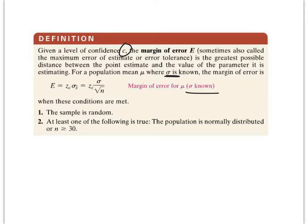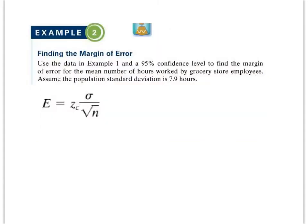Here's the formula we're going to use — really this portion specifically. In order to use this, the sample must be random and the population is normally distributed, or you have a sample greater than 30. These are the criteria and the formula for what we're going to do. We're just going to find the margin of error.